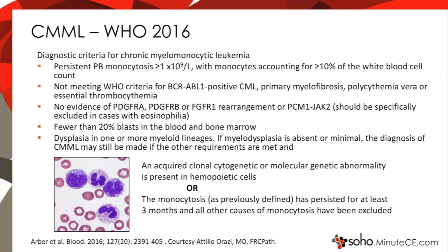CMML is the most common of the MDS-MPNs and is noted by monocytosis. In the 2016 revision of the WHO myeloid classification schema, peripheral monocytosis with greater than 10% of the white blood cell count in the blood was noted as a primary characteristic, along with dysplasia in one or more lineage. In the absence of dysplasia, a patient can still have a diagnosis of CMML if they have an acquired clonal cytogenetic or molecular genetic abnormality, or if monocytosis persists for three months in the absence of a reactive cause.